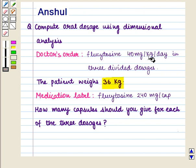The other conversion factor is the manufacturer's equivalent, or 240 mg per capsule. The answer unit is the number of capsules.